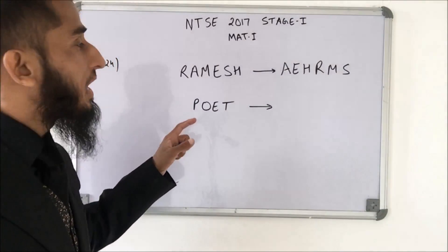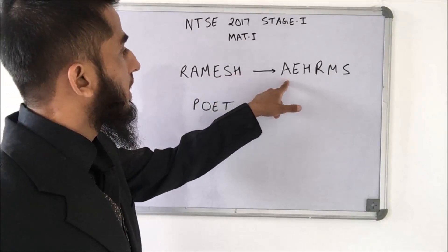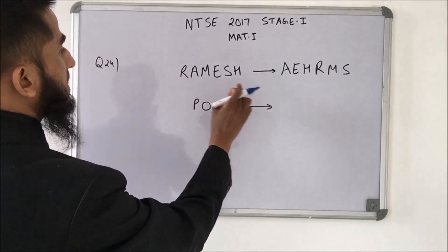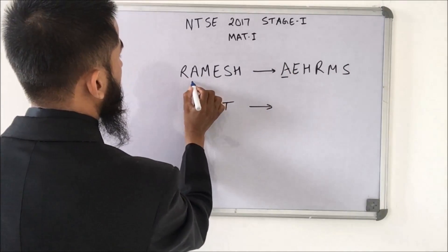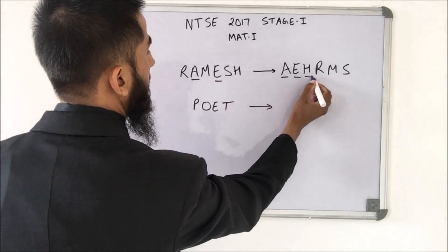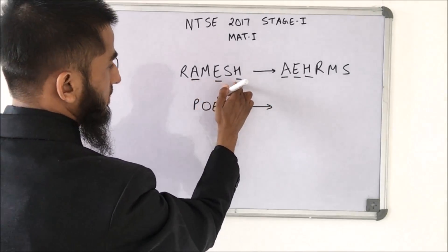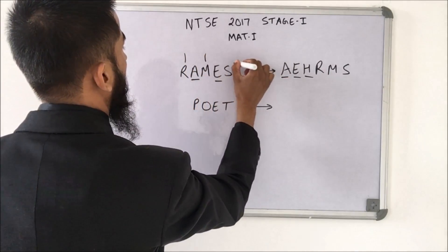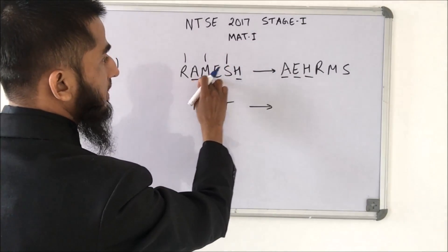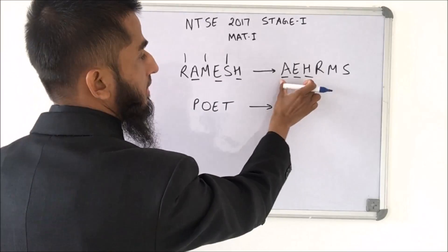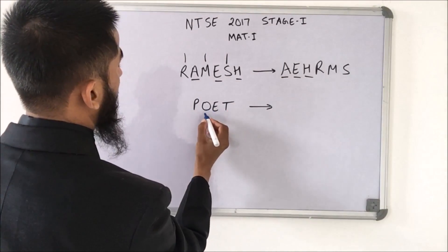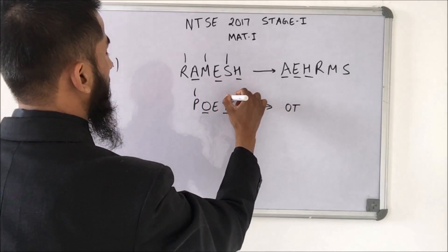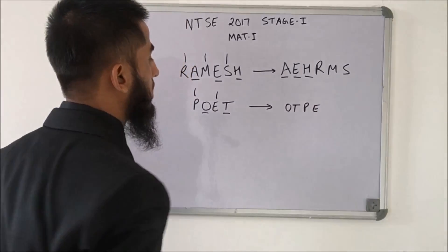This question says that in a coded language, RAMESH is written as A, E, H, R, S. Let's analyze the pattern: starting from the second letter and taking alternate letters consecutively. Following this pattern for the target word, we get the remaining letters P and E, giving us O, T, P.